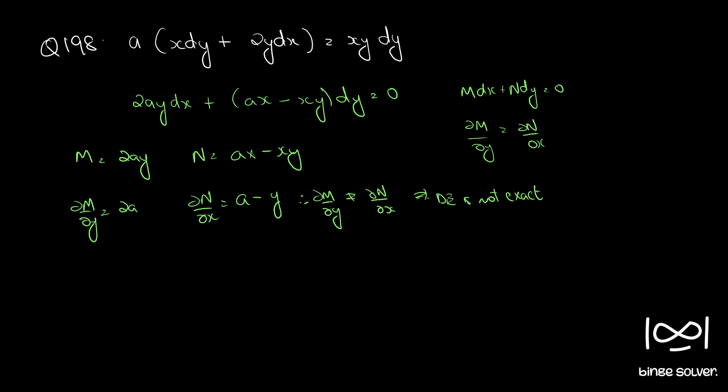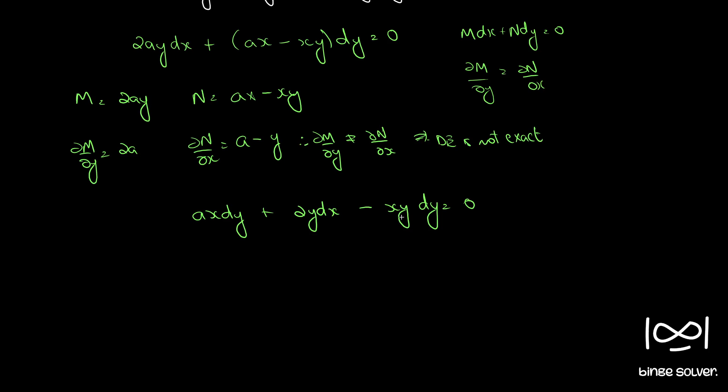So now we can rearrange it and solve. The given equation is ax dy plus 2y dx minus xy dy equal to 0. If you observe, there is an x here and dx but there is a y here, and dy there is an xy. So if you divide throughout by xy we have a/y dy plus 2/x dx minus dy.